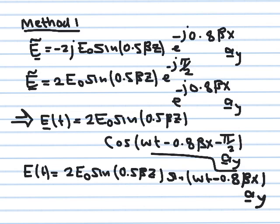This is the full phasor. We multiply by e^(jωt) to convert to time domain. When you multiply, you add the complex exponents and get jωt − jπ/2. The total complex angle in the time domain becomes j(ωt − 0.8βx − π/2). Taking the real part gives a cosine of (ωt − 0.8βx − π/2).